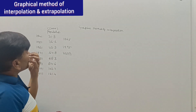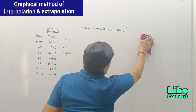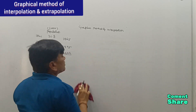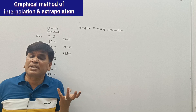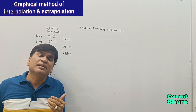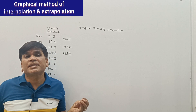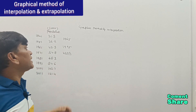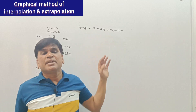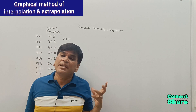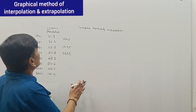Firstly, we will draw a graph of the given data, then interpolate the data for the desired year. Since population data is recorded every 10 years, we need to interpolate for years in between, such as 1965 or 1995. The first method is the graphical method, and later we will discuss the mathematical method for interpolation.